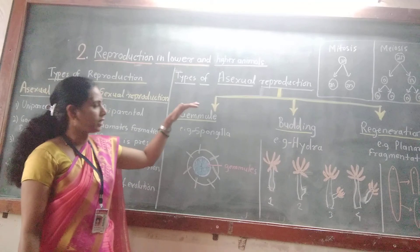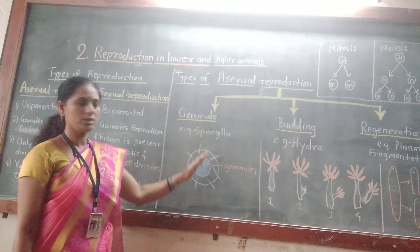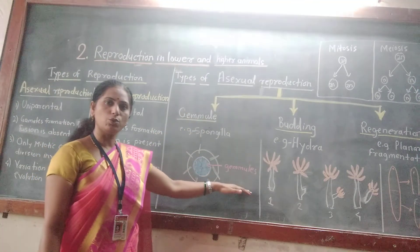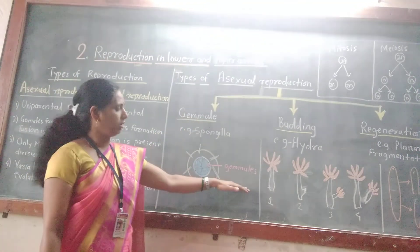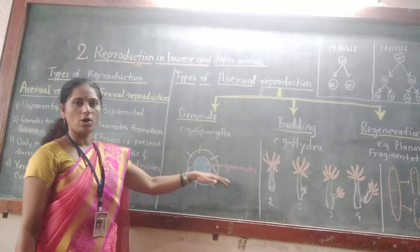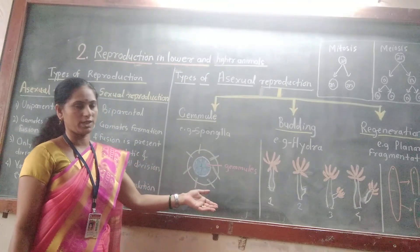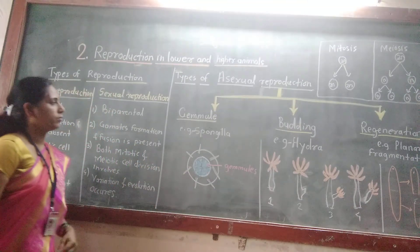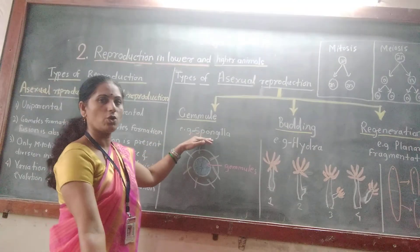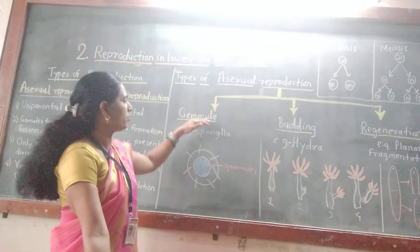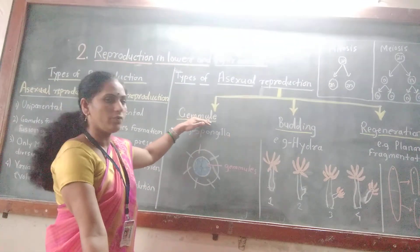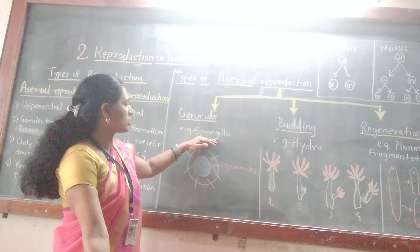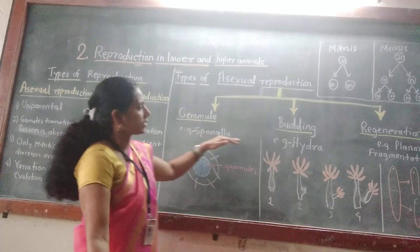After the return of favourable conditions, the gemmule hatches into offspring or the next generation. This type of reproduction occurs in phylum Porifera, one example being Spongilla.